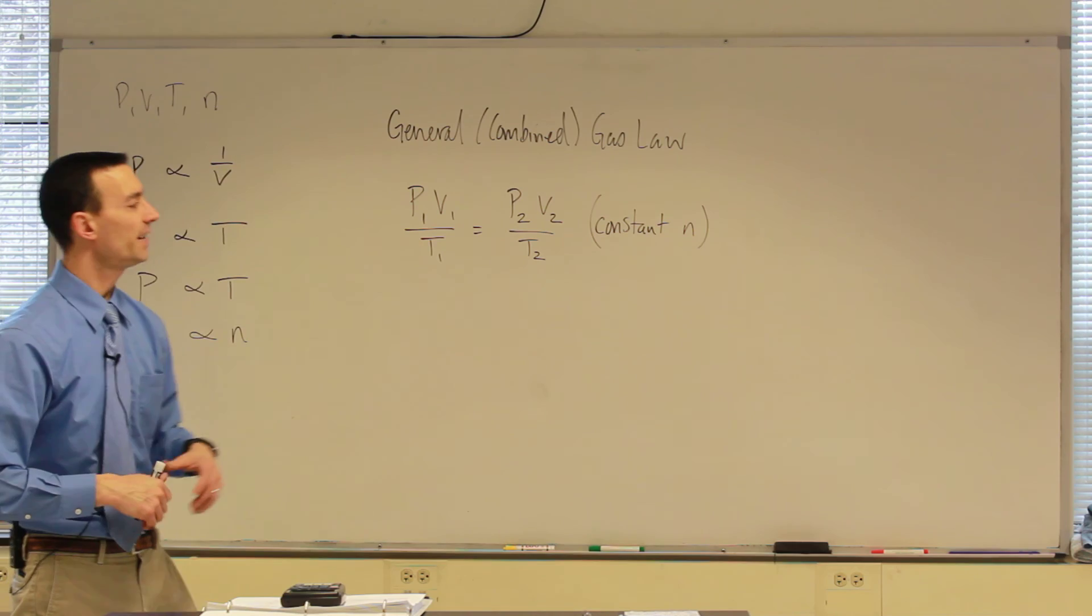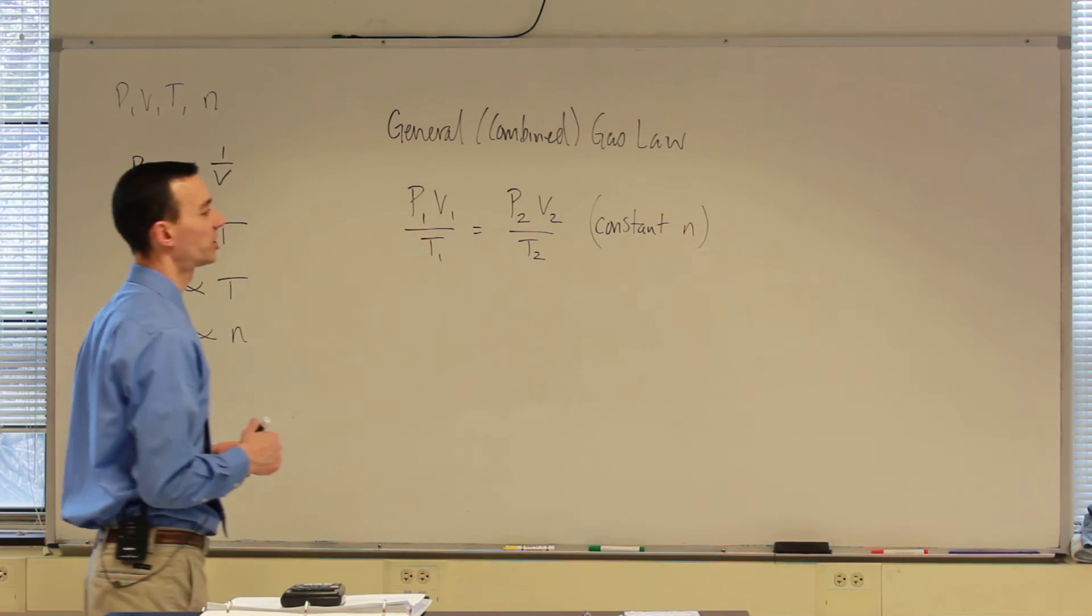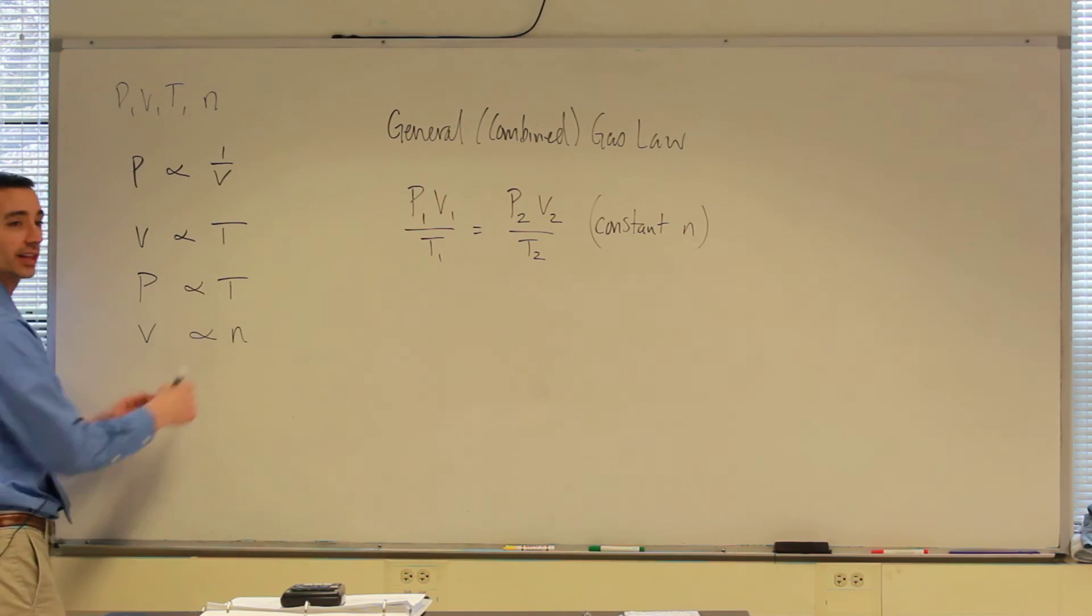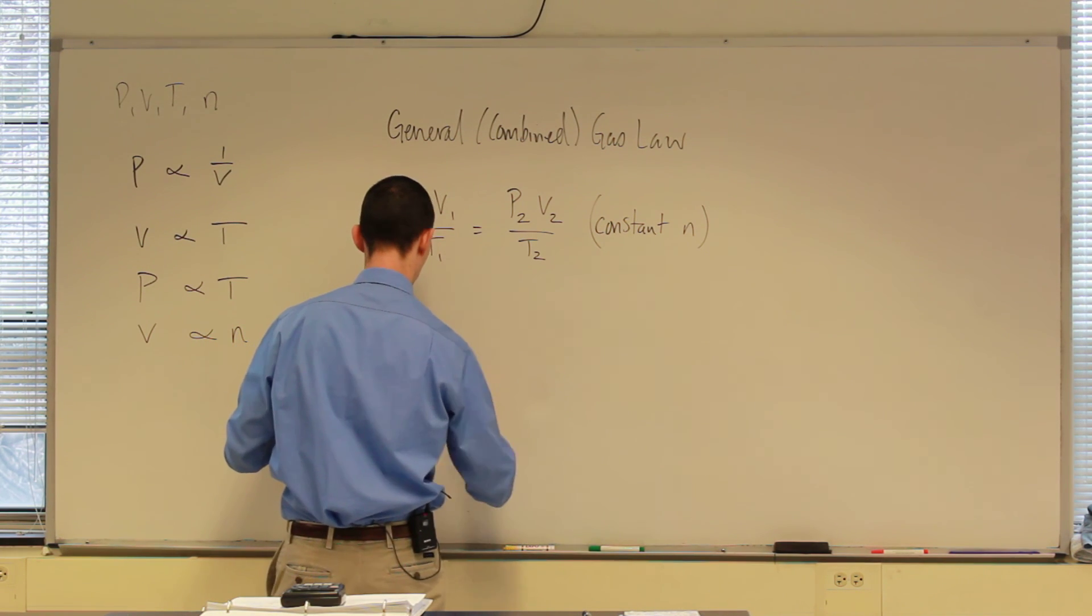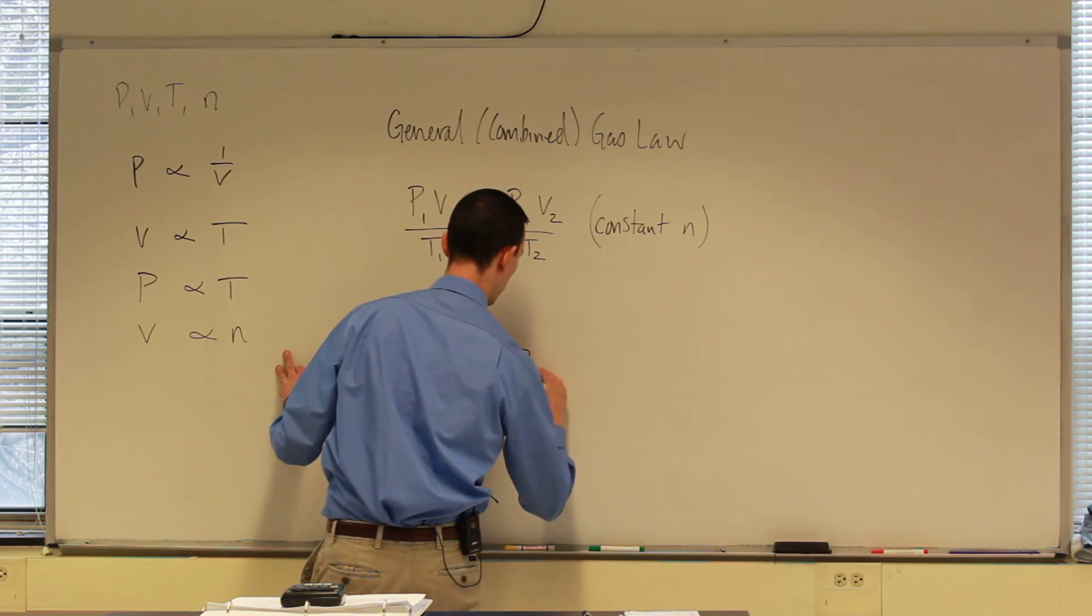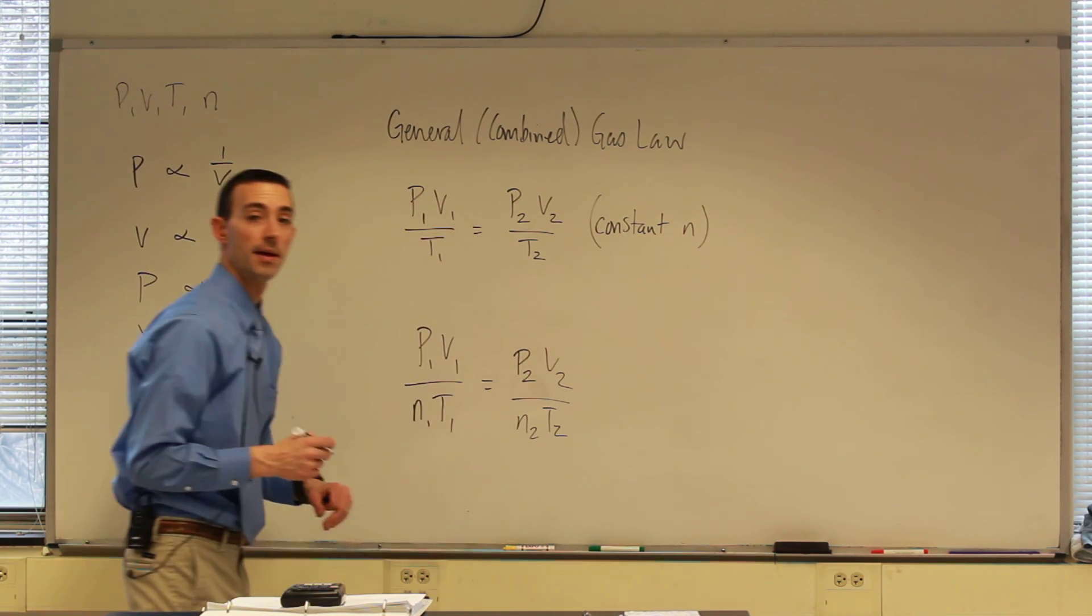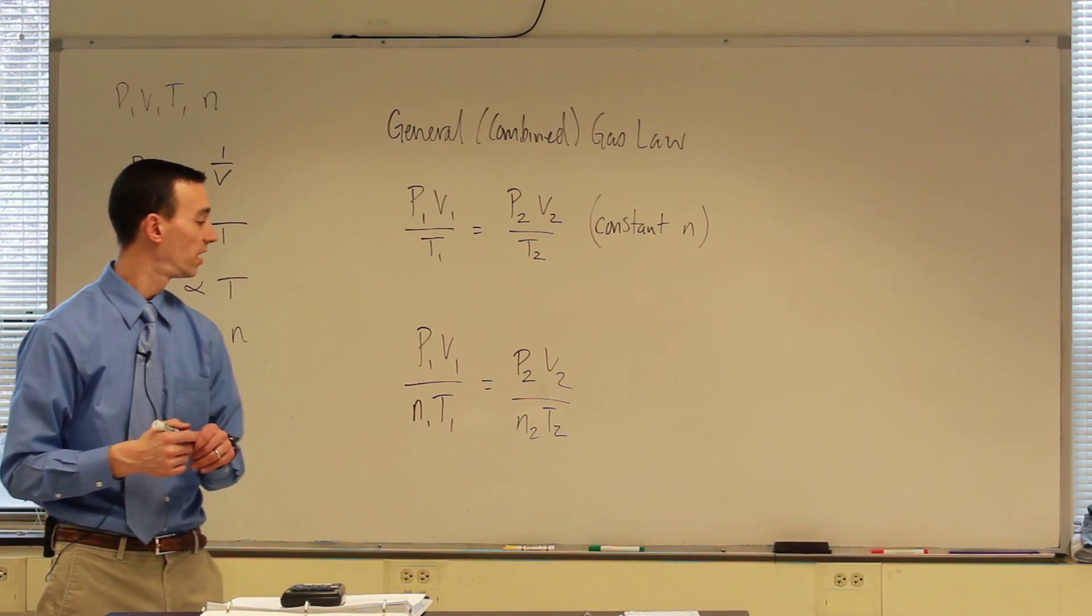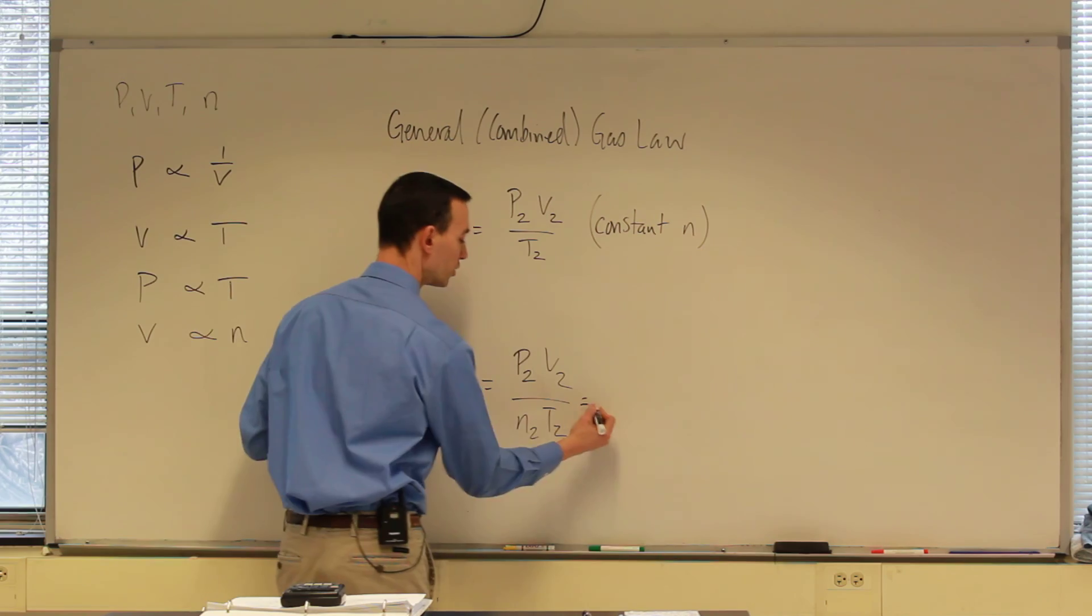If we take away that constraint of N changing though, and allowing N to change, based on how N is related to volume, we end up with P1 V1 over N1 T1 equals P2 V2 over N2 T2. However, because these are the only four properties, it turns out that no matter what gas you use, oxygen, carbon dioxide, nitrogen, helium,